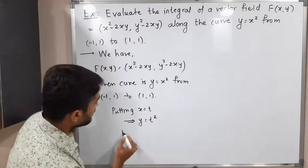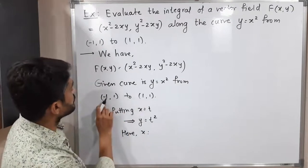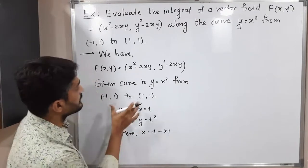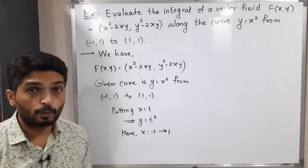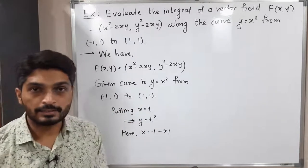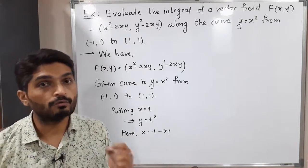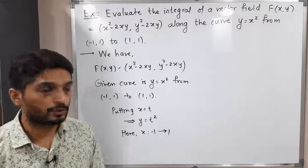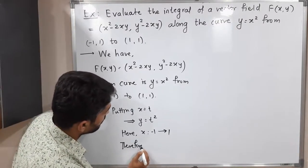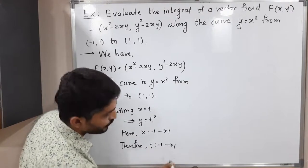Here you can easily see that x varies from −1 to 1. You can consider the x-coordinates of these two points. Since x = t, and x varies from −1 to 1, obviously t also varies from −1 to 1.